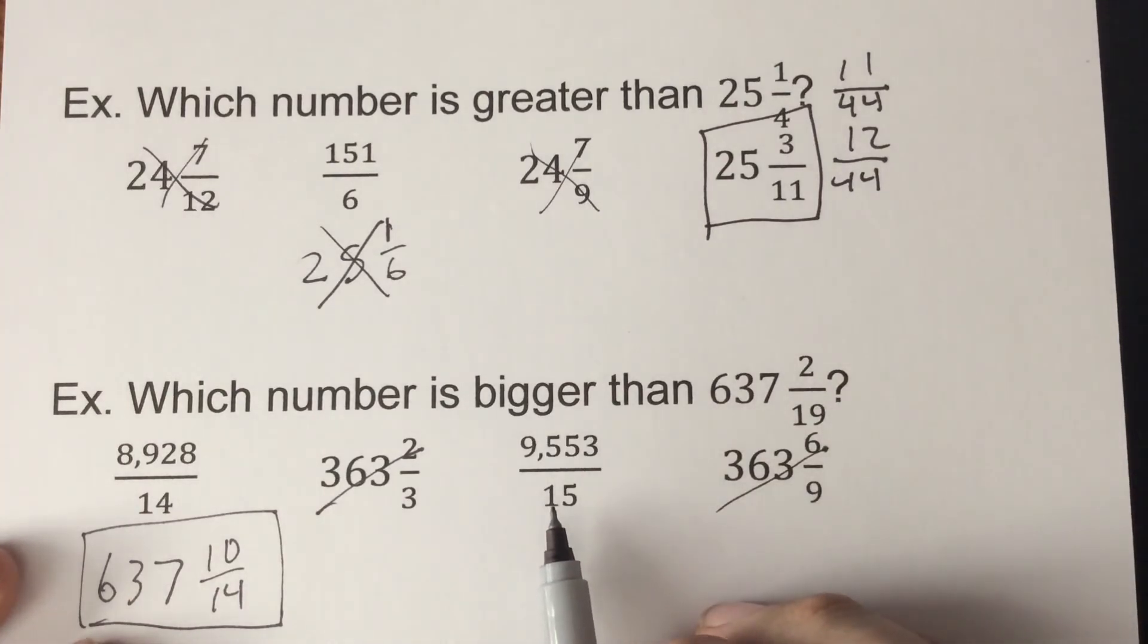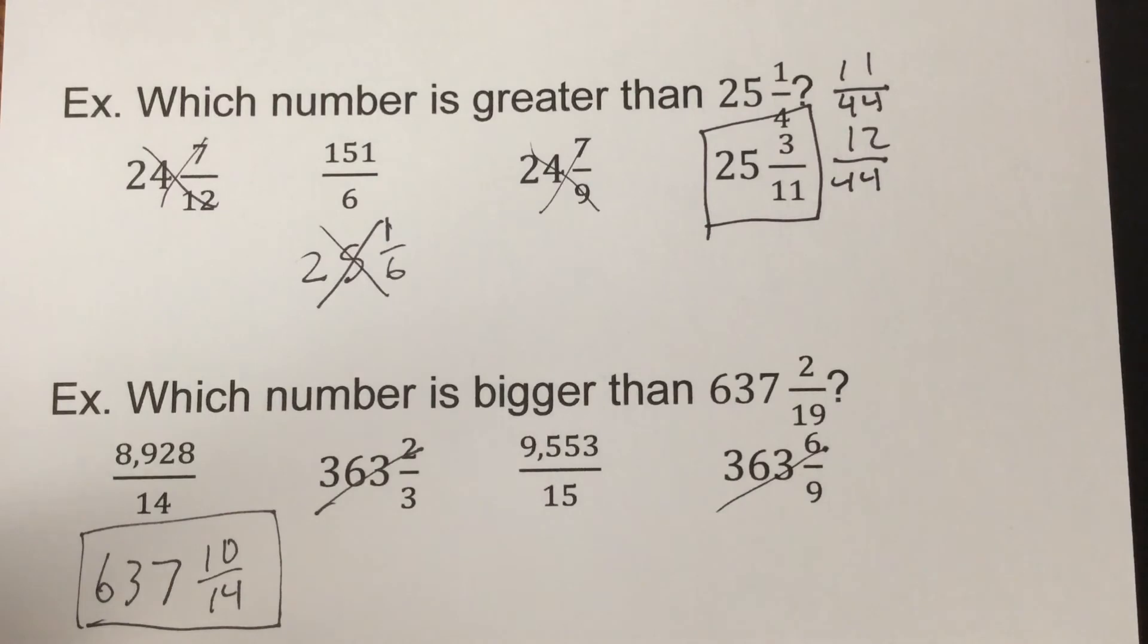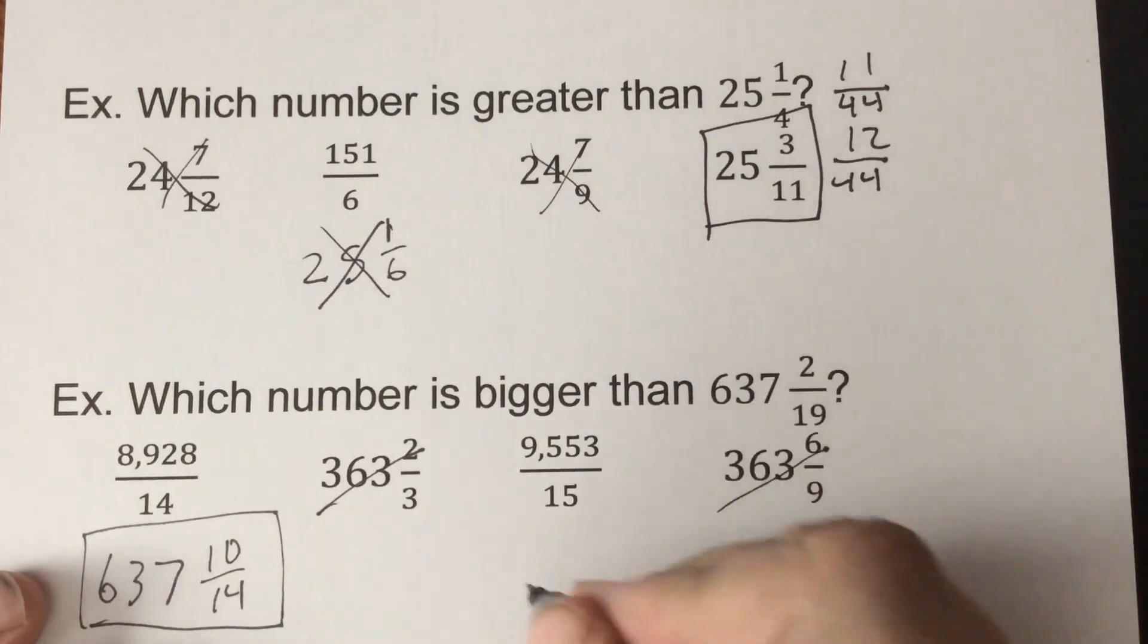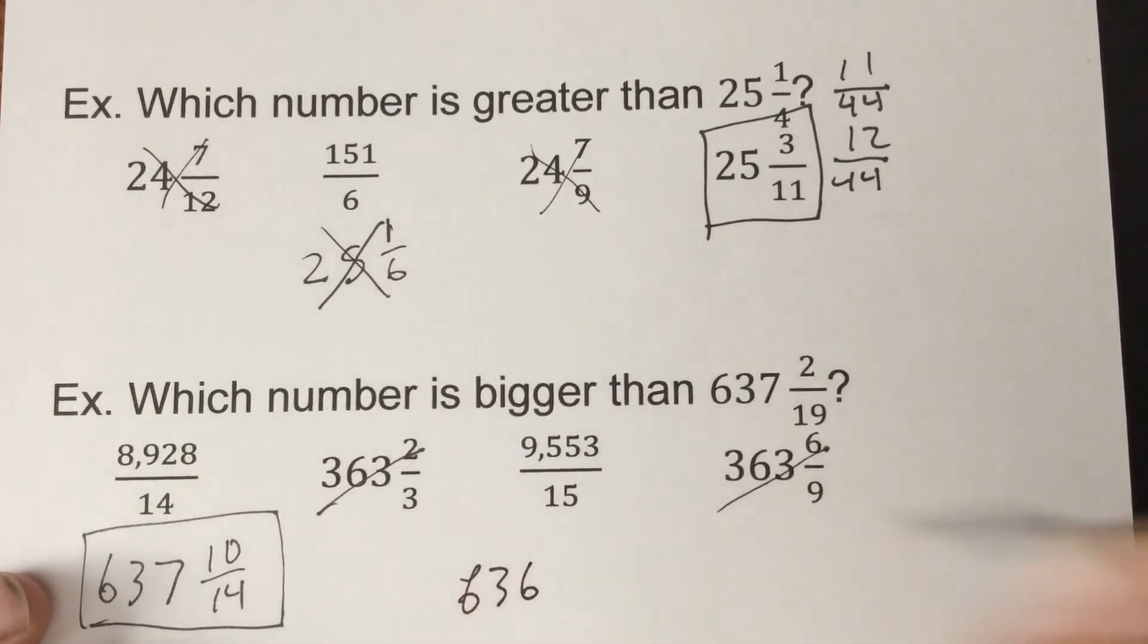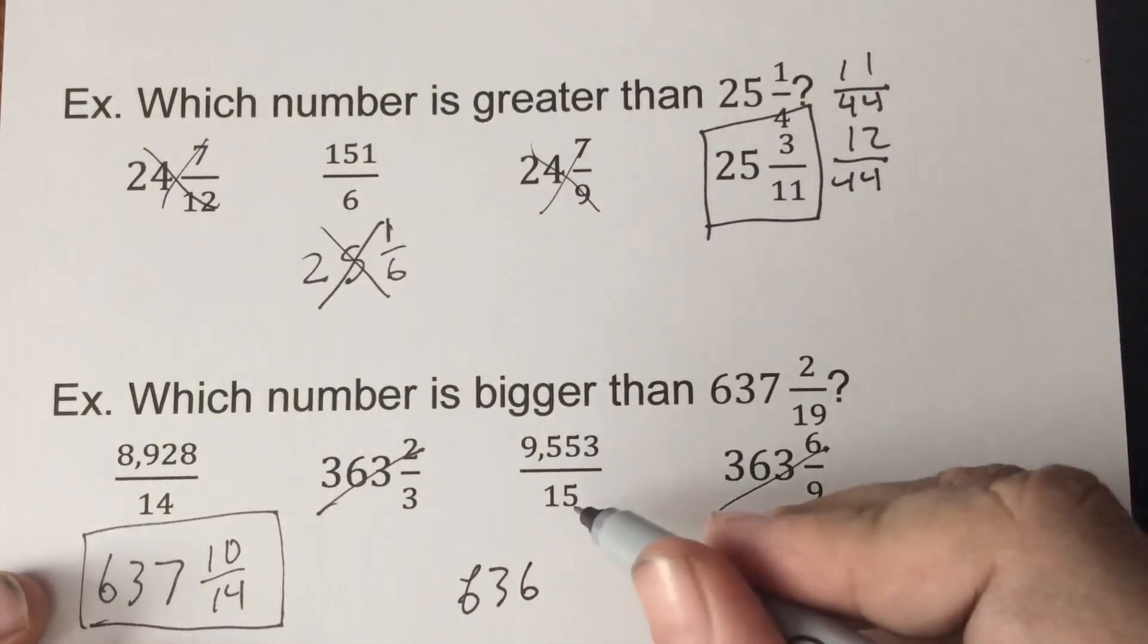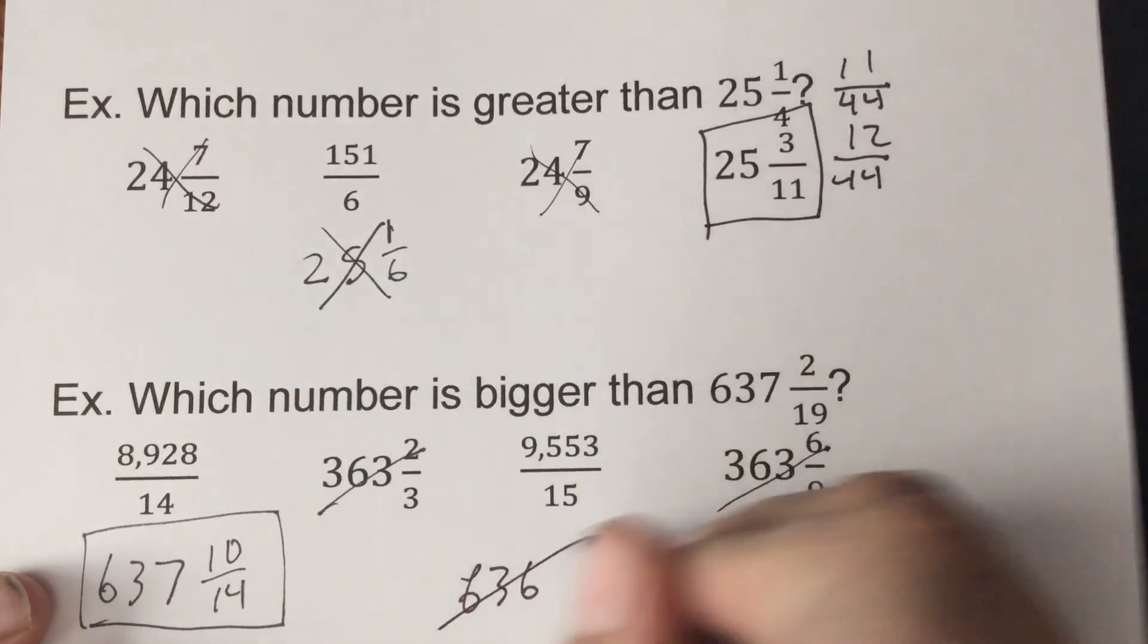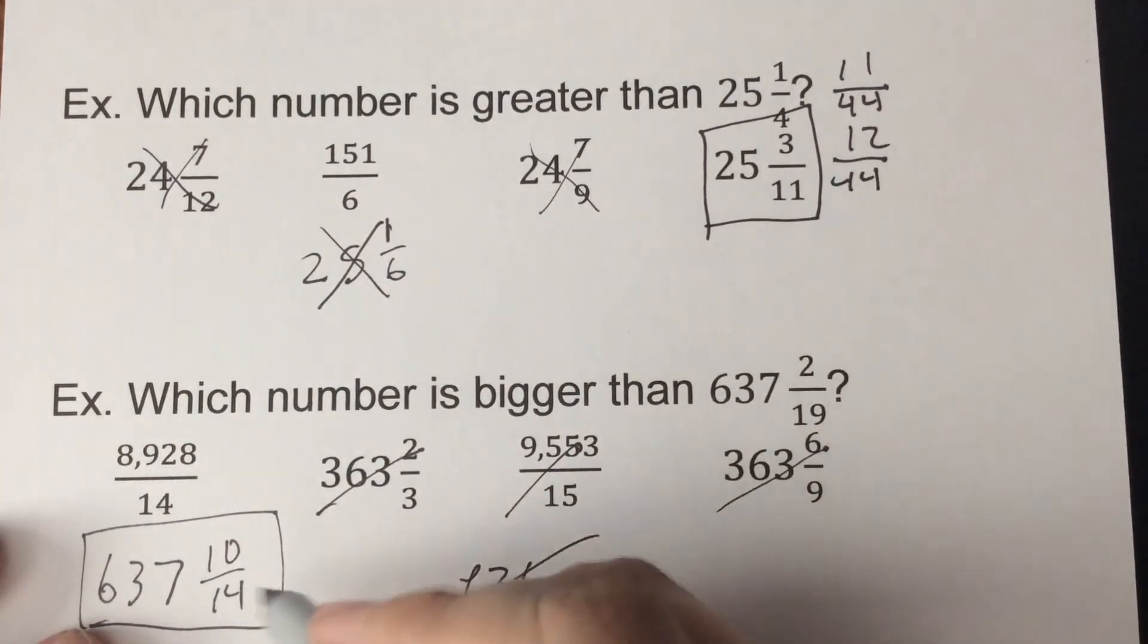The other way to go about this one. So 9553 divided by 15, it's 636.866. So that alone right there tells you it's not going to be bigger than 637. So that one's not going to work. So this is the one that works.